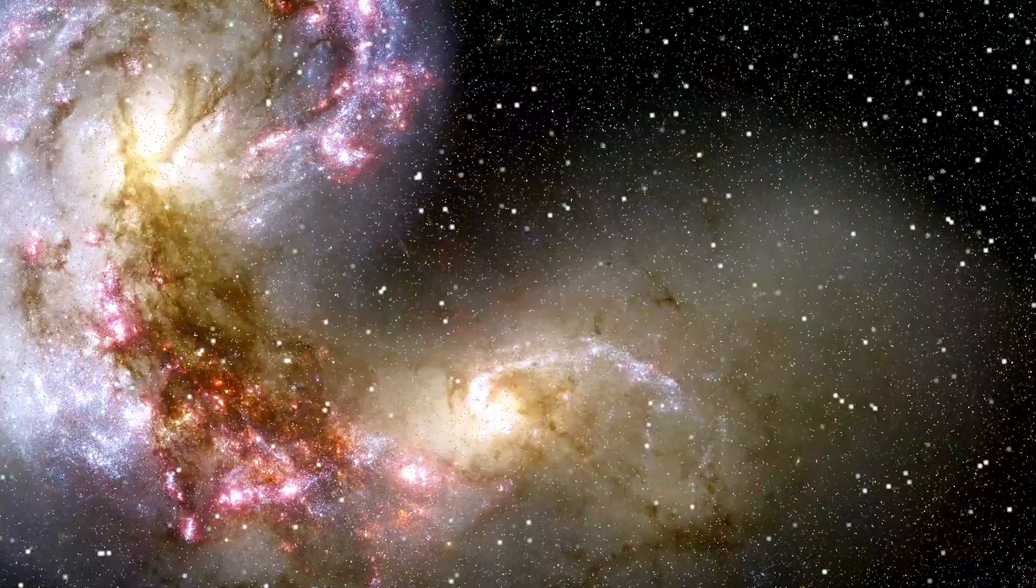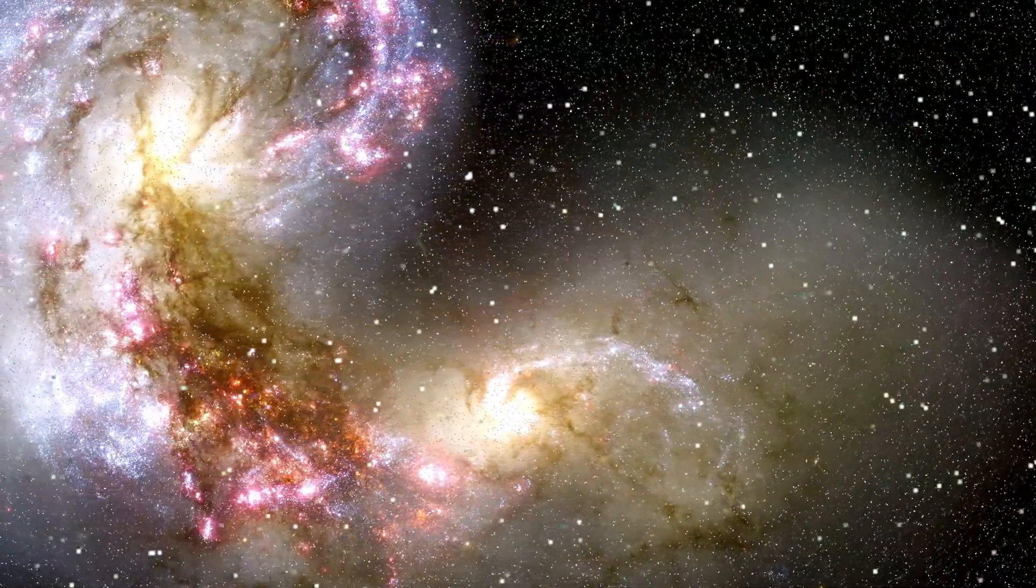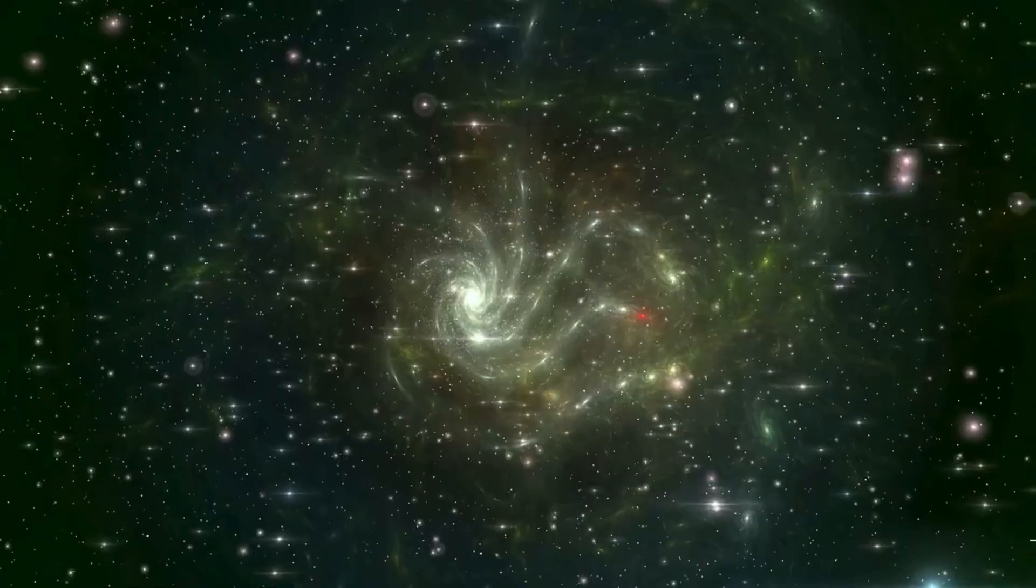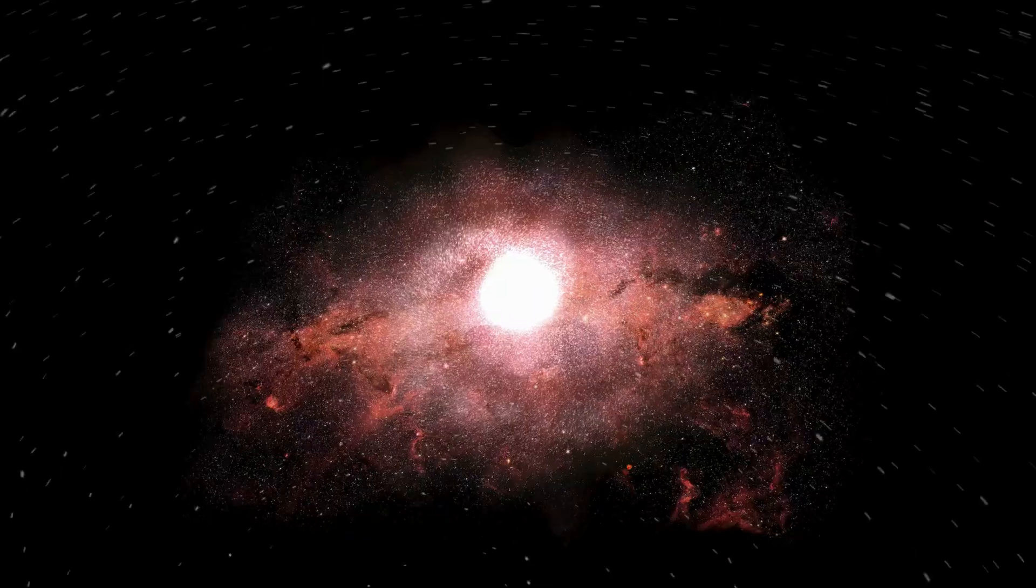In one corner of the observation, shadows passed across a background galaxy. Not once, but multiple times during long exposures. These were not instrumental errors. They were actual occultations, meaning something moved in front of the distant light source.